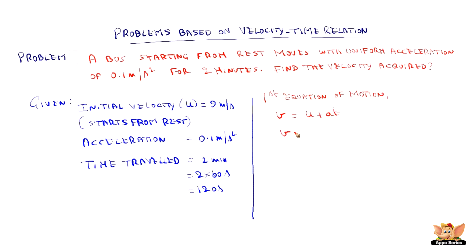Now, to find out v is equal to: u is given as 0 meter per second, a is given as 0.1 meter per second square, and t is given as 120 seconds. So, this amounts to 0.1 into 120 is 12 meter per second.